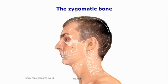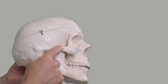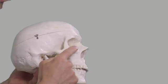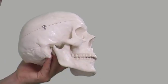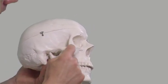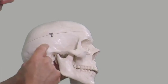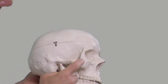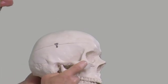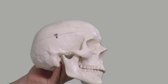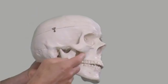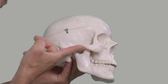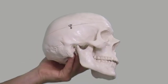The zygomatic arch is a horizontal eminence on the lateral part of the cranium that can be palpated through its entire length. The anterior component is formed by the zygomatic bone and the posterior part by the temporal bone. The posterior end is narrow, ending just above the tragus. The anterior end is broad as it continues with the zygomatic bone. The lower border of the zygomatic arch is more palpable than the upper.